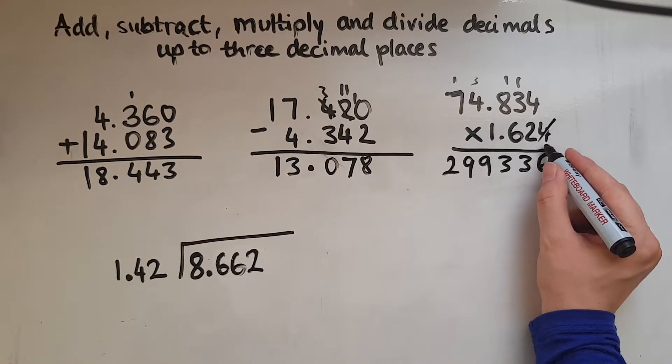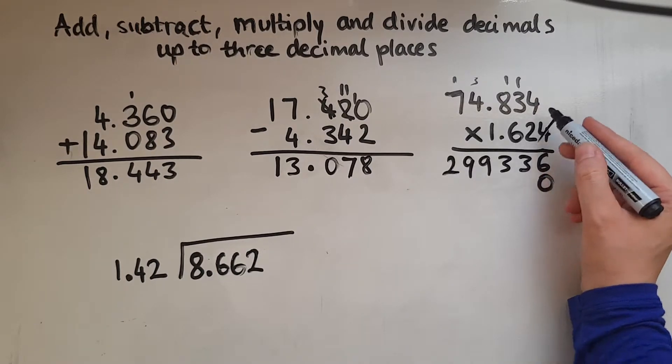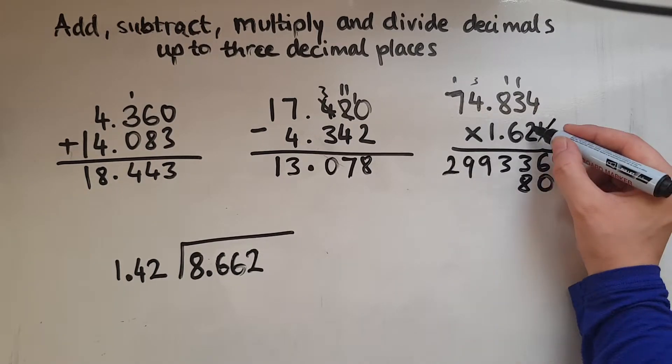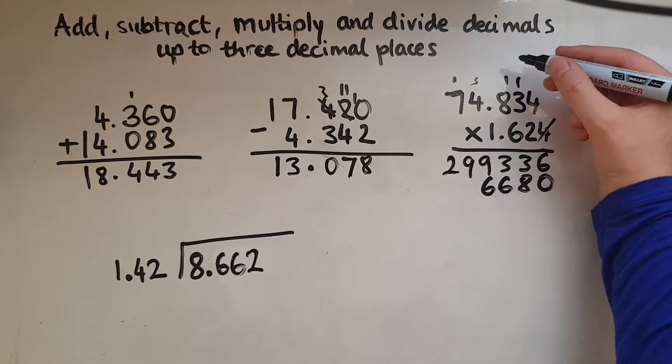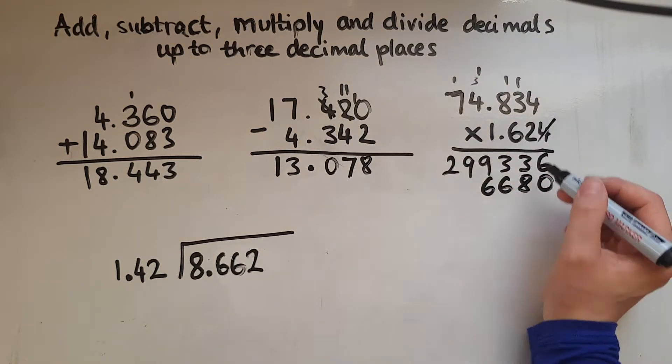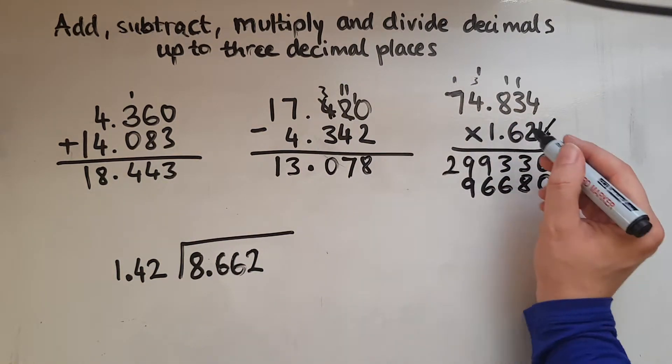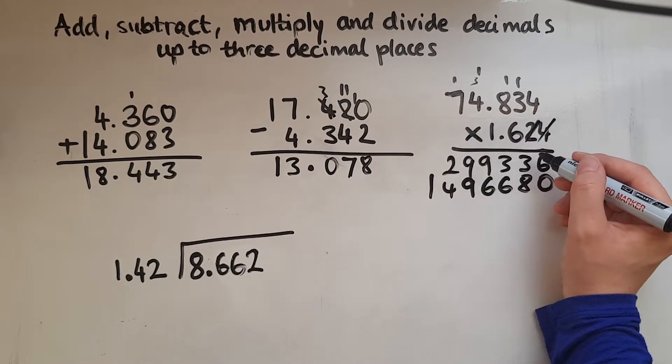So we're finished with the 4, we move to the 2. So again, that if it was whole numbers, that would mean 20. So I put a 0 down, and then treat it as 2. 2 times 4 is 8. 2 times 3 is 6. 2 times 8 is 16. So 6 and 1 carried over. 2 times 4 is 8, and the 1 is 9. 2 times 7 is 14. So finish with the 2, move to the 6.